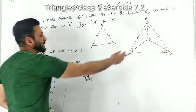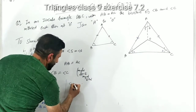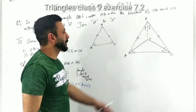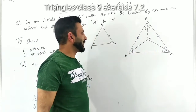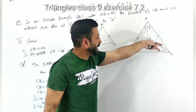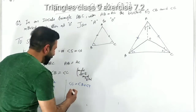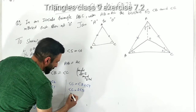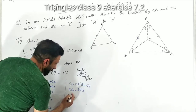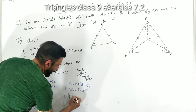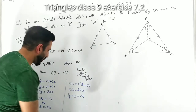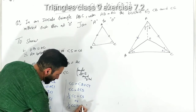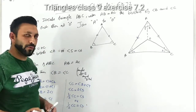Similarly, for angle C — angle C is made up of angle 3 plus angle 4. Since OC is the bisector, it divides angle C into two equal parts. So angle C equals twice angle 3. Transposing, half of angle C equals angle 3, and half of angle C equals angle 4, because angle 3 and 4 are equal.